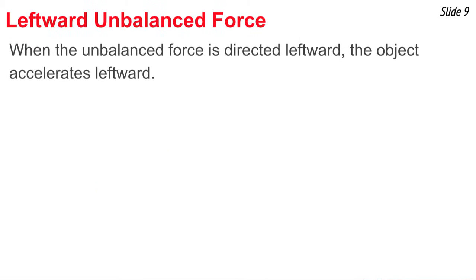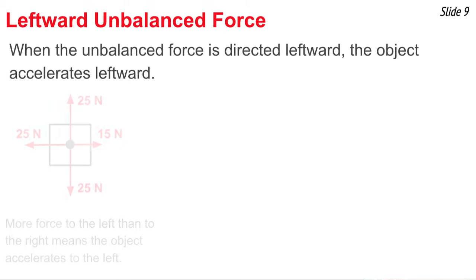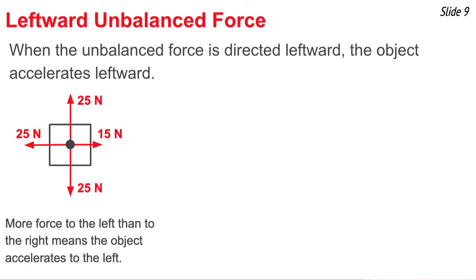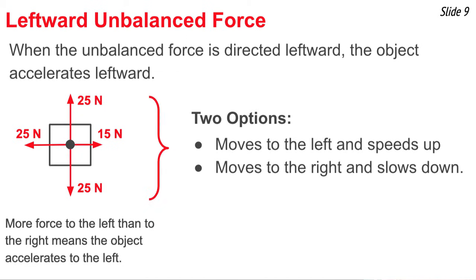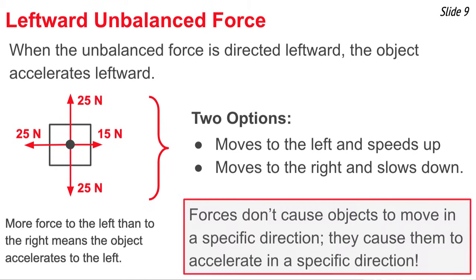Now applying this rule to a leftward unbalanced force: an unbalanced force directed leftward causes an object to accelerate leftward. Having more force to the left than to the right leads to a leftward acceleration. Two options are possible: the object could move to the left and speed up, or it could move to the right and slow down. When you see more force to the left than to the right, it doesn't mean the object is necessarily moving to the left — it could be moving to the right and simply slowing down. Forces don't cause objects to move in a specific direction; they only cause them to accelerate in a specific direction.